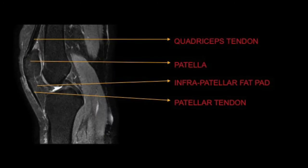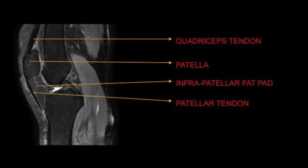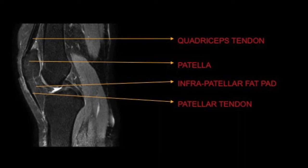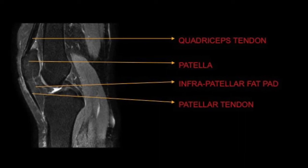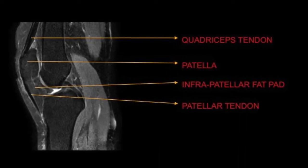Anterior extensor mechanism of the knee joint. The extensor mechanism of the knee is a complex structure formed basically by three structures that are interlinked with each other: the quadriceps muscle tendon, the patella, and the patellar tendon.